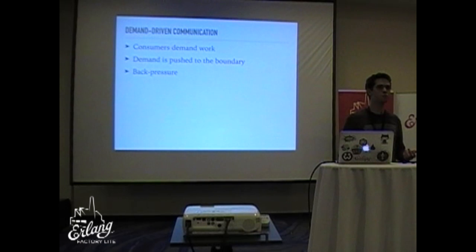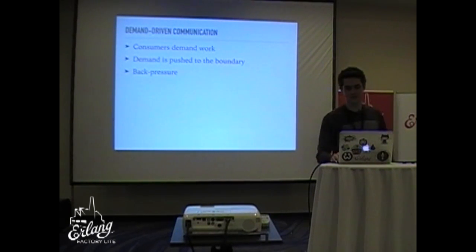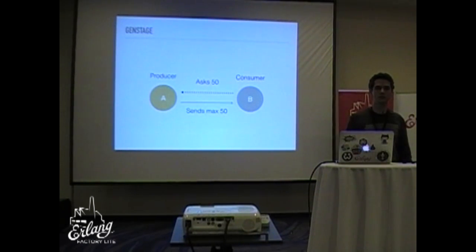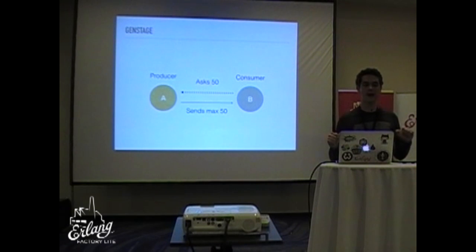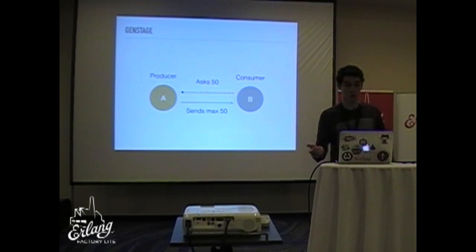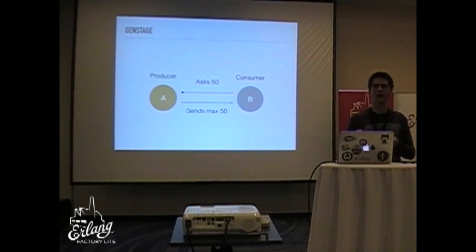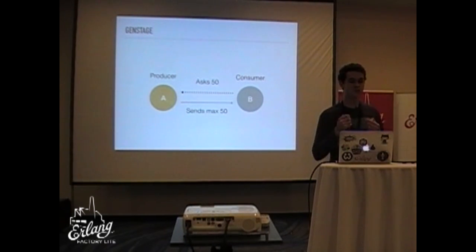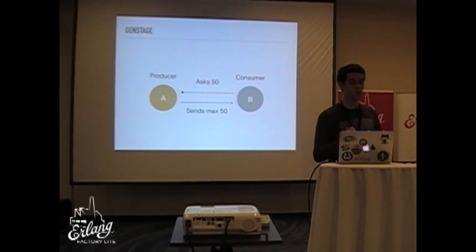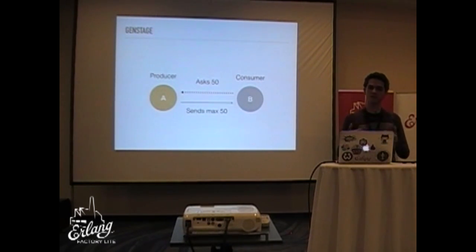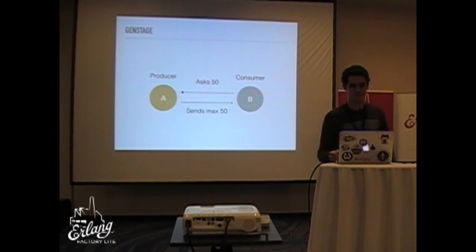Let's talk about how Elixir brings this to the language — with GenStage. In GenStage you have producers and consumers. The consumer asks for work, and then the producer realizes its consumer is ready to get more work and sends at most the amount that the consumer asked for. Even if the consumer is very fast and the producer can't catch up, we're fine. But if the consumer is very slow and the producer respects the contract — sending at most that amount of work — we will not end up in that clogged situation.